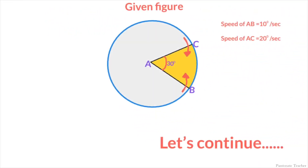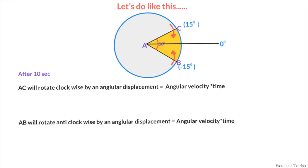Let's look into the problem here. BAC is a sector formed by a 30-degree angle. AB is rotating at a speed of 10 degrees per second in the anti-clockwise direction, and AC is rotating at a speed of 20 degrees per second in the clockwise direction. Let's draw a line which is at reference 0 degrees.